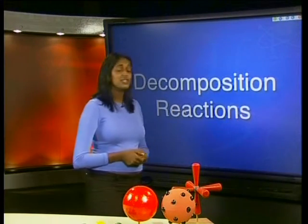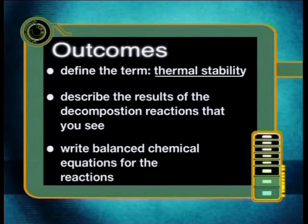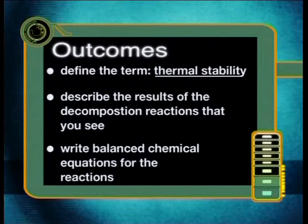In this lesson, we will test the thermal stability of four metal oxides. If the compounds can't separate during these experiments, we call the reaction a decomposition reaction. This will only happen if the metals are not thermally stable or not very reactive. By the end of this lesson, you should be able to: 1. Define the term thermal stability. 2. Describe the results of the decomposition reactions that you see. 3. Write balanced chemical equations for the reactions that you see.